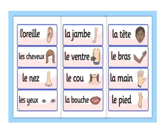La ventre — belly. Le bras — arm. Le nez — nose. Le cou — neck. La main — hand. L'œil — eyes. La bouche — mouth. Le pied — foot. You will practice these words and pronounce them to practice, and also learn the names.